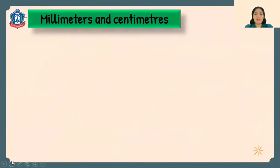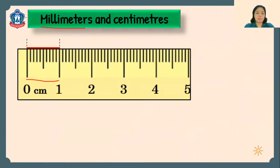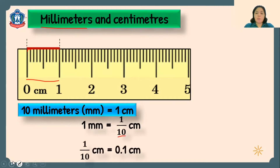Now let's go to millimeters and centimeters. This is a centimeter ruler. From 0 to 1 is what we call one centimeter. Between 0 and 1, there are 10 small markings — these are called millimeters. So from 0 to the first marking, that is 1 millimeter. Therefore, 10 millimeters is equal to 1 centimeter. How about just 1 millimeter? One millimeter is 1 part out of 10, which is 1 tenth of a centimeter. If we convert this into decimal, 1 millimeter is equal to 0.1 centimeter.